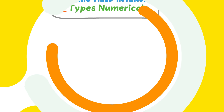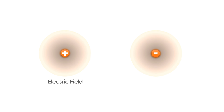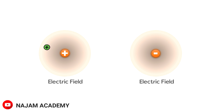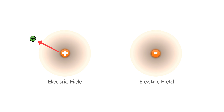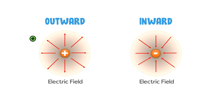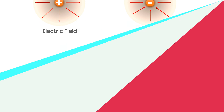In the previous lecture, we learned that there is electric field around any charged particle, either positive or negative. Secondly, we learned that if we place a test charge inside the electric field, the test charge experiences electrostatic force. Thirdly, we learned that electric field is in the outward direction on positive charges and in the inward direction on negative charges. Remember these three important concepts.